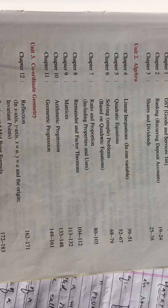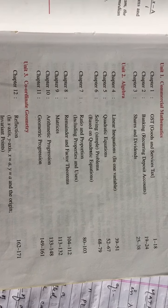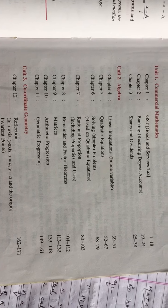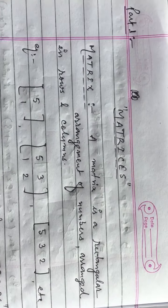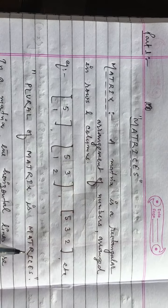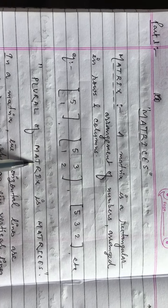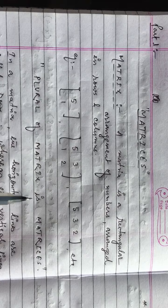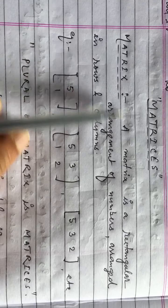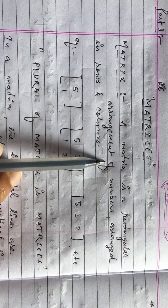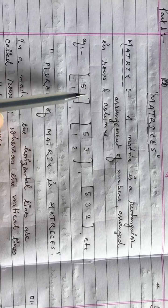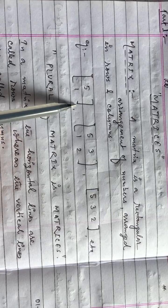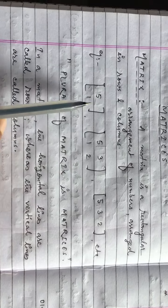Today I will start matrices. In matrices, first we will see the basic concepts and some definitions. The word 'matrices' is the plural of 'matrix'. A matrix is a rectangular arrangement of numbers arranged in rows and columns. Here is an example — I have put square brackets and some numbers are written inside the bracket.